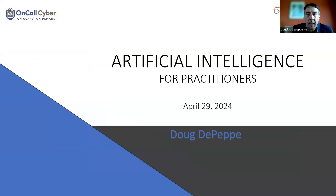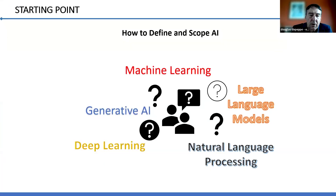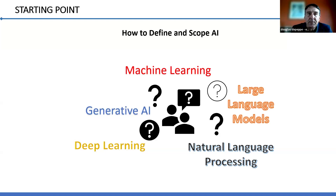To start, we have to get our arms around what is artificial intelligence or AI. If you've looked at it at all, you may have seen a number of these phrases — maybe not all of them. I think it's important to understand the risks associated with its use in practice by first understanding the nature of it. These are different terms associated with AI.